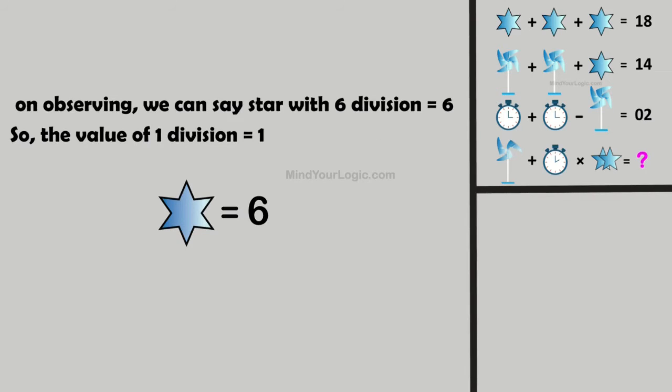On observing, we can say star with 6 divisions equals 6. So the value of 1 division equals 1.